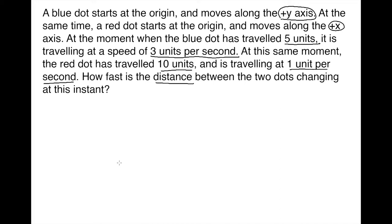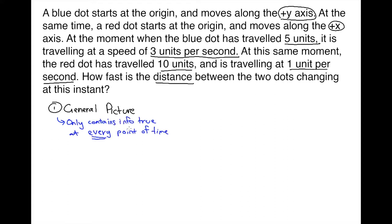That's a very common kind of problem in related rates — it sets up a scenario where you have some stuff going on, and it asks you about how fast some quantity, like this distance, is changing at a particular instant. The general formula for how distance is changing is not often that helpful; we're more interested in that instant in particular. So the first step I'd like to do is to set up what I call my general picture. The general picture is just a sketch of what's going on, and it contains information that's true at every point of time. It's also the place where I like to put in my variables.